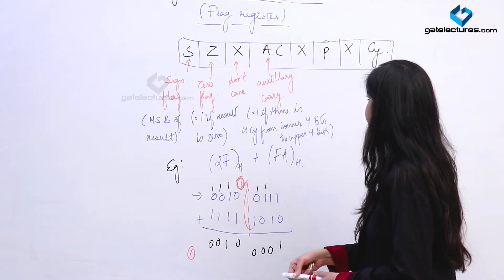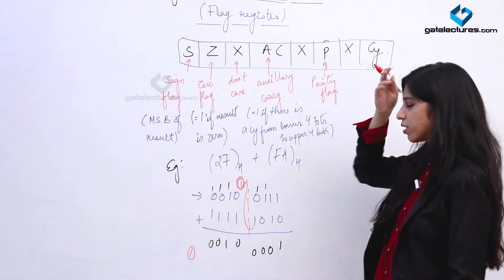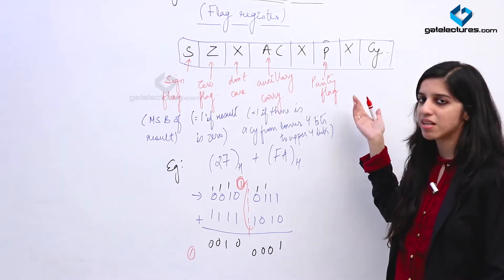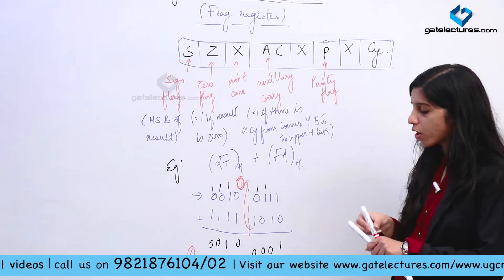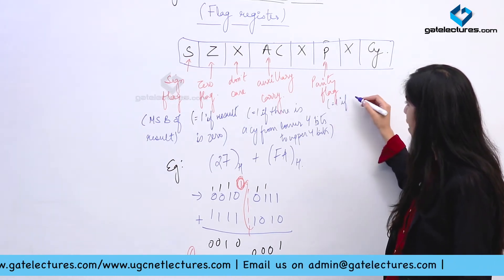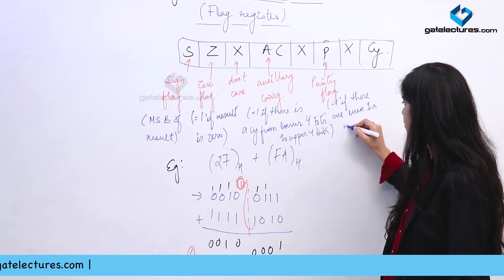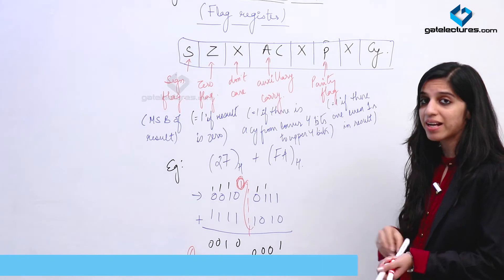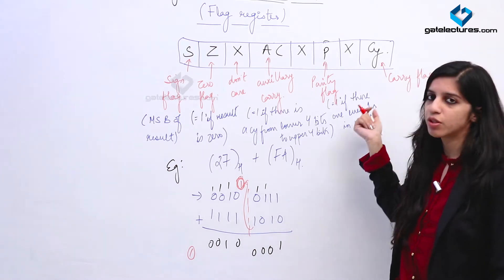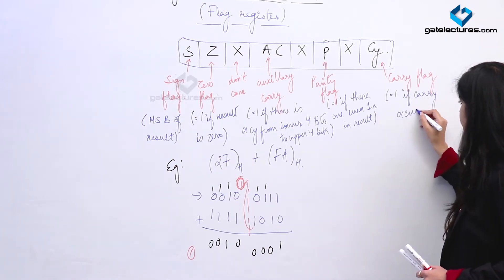The P is the Parity flag. In electronics, if there are an even number of ones in the result, that is known as even parity; if there are an odd number of ones, it is odd parity. This flag is 1 if parity is even, meaning there are even ones in the result. The Carry flag is set if a carry occurs in the result.